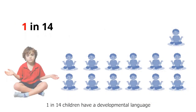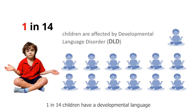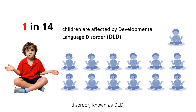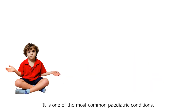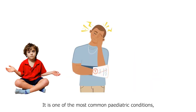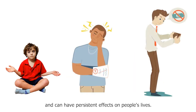1 in 14 children have a developmental language disorder, known as DLD, which affects their ability to learn words and grammar. It is one of the most common paediatric conditions and can have persistent effects on people's lives.